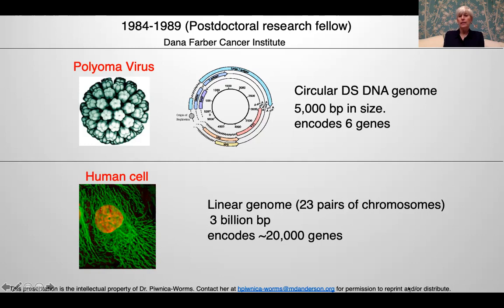This is in contrast to human cells, which are much larger, have linear genomes with 23 pairs of chromosomes, 3 billion base pairs, and encode approximately 20,000 genes. In addition, at that time we didn't have all the amazing technologies we have today to really study human tumor tissue.